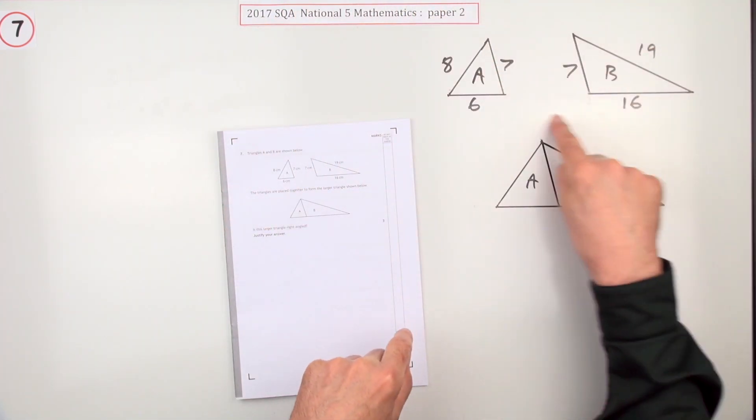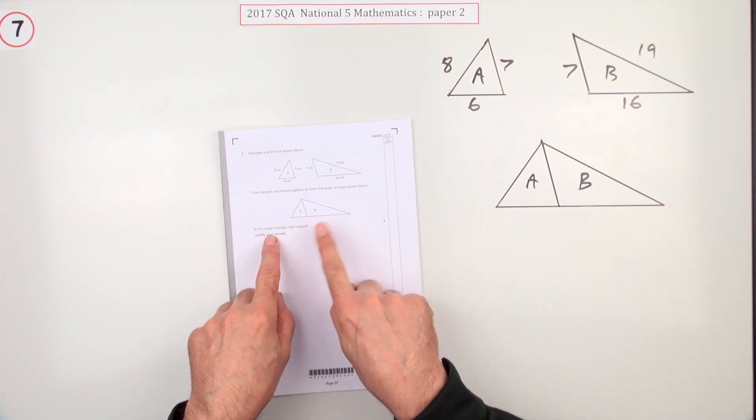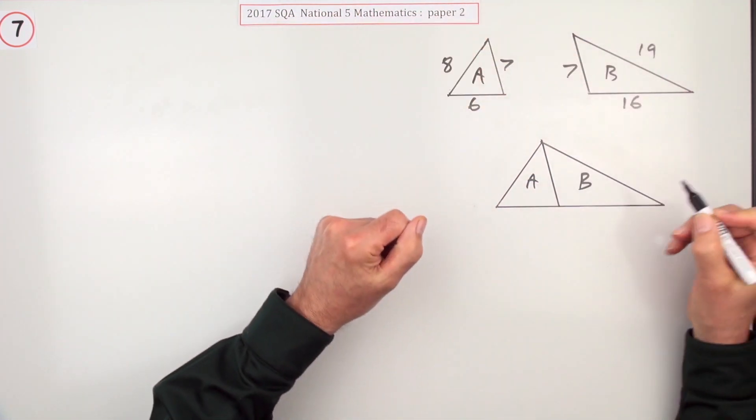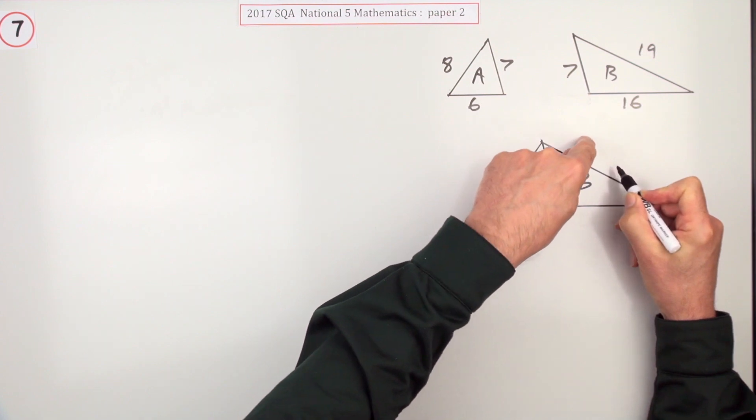When placed together they form this larger triangle. The question is: is this larger triangle right-angled, for three marks? When you join them together, the sevens will disappear. This side will be left as eight, this side will be left as 19.